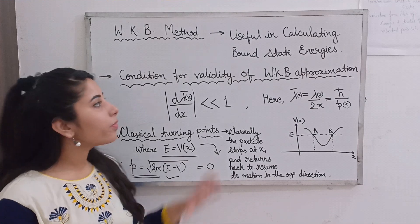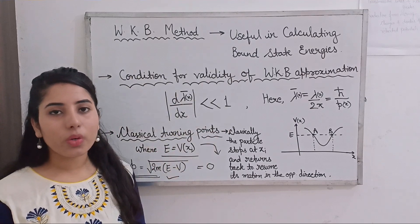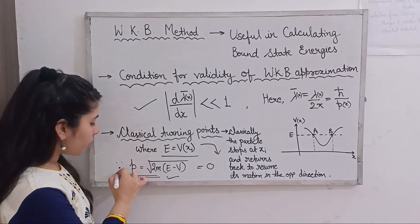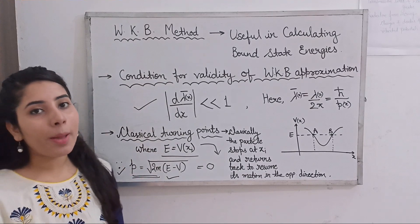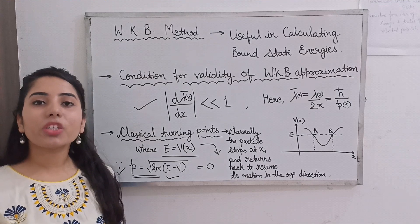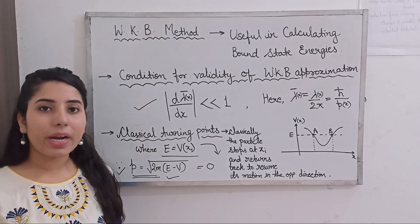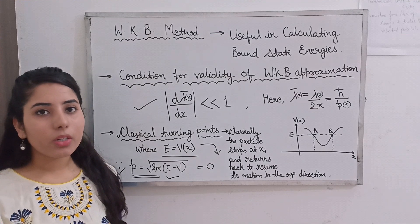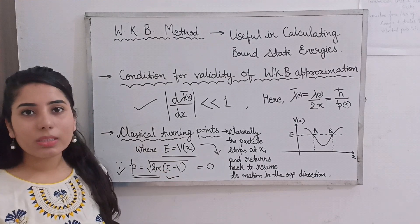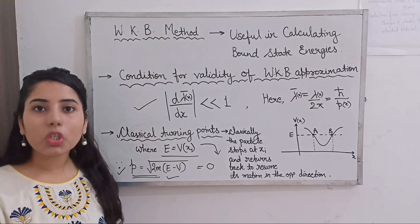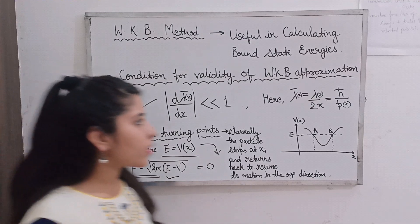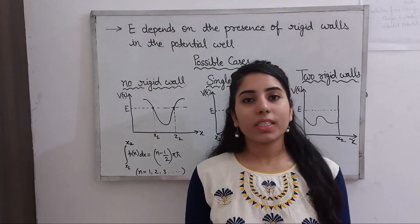To summarize the key takeaways so far: the condition for validity of WKB approximation is important to memorize; the momentum formula p = √(2m(E − V)) is important; and the classical turning points are points where the total energy of the particle equals the potential energy. After covering a few more important points, we will move to questions.